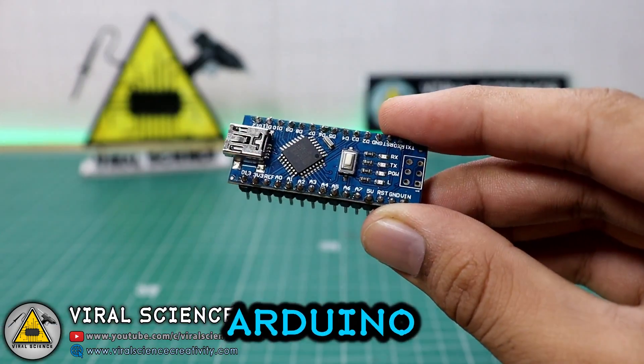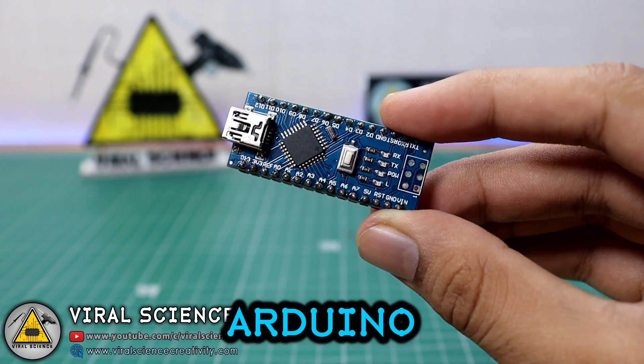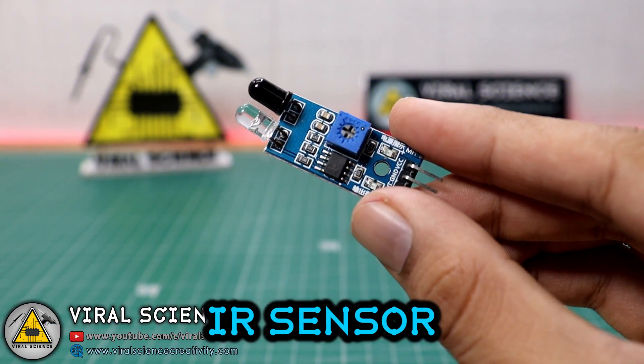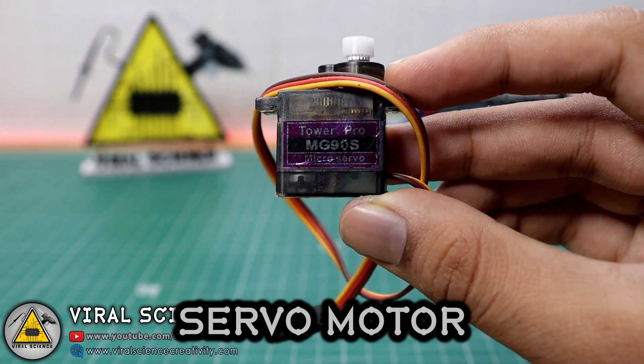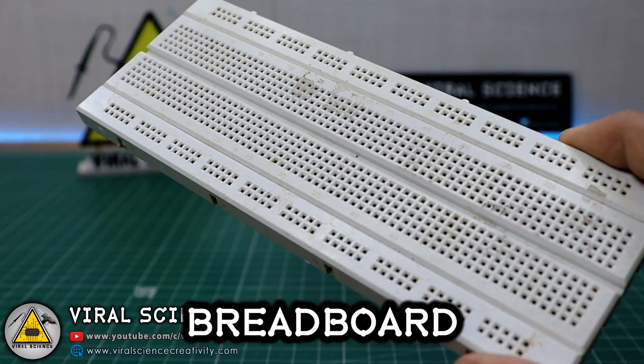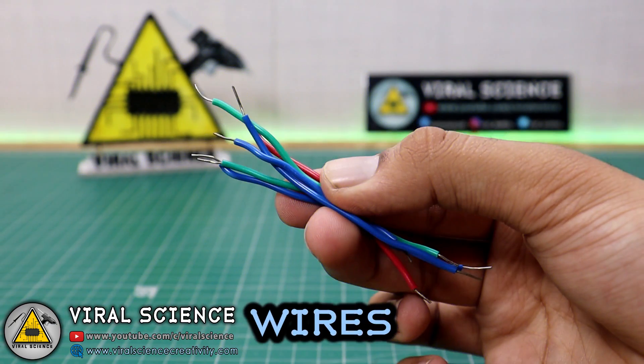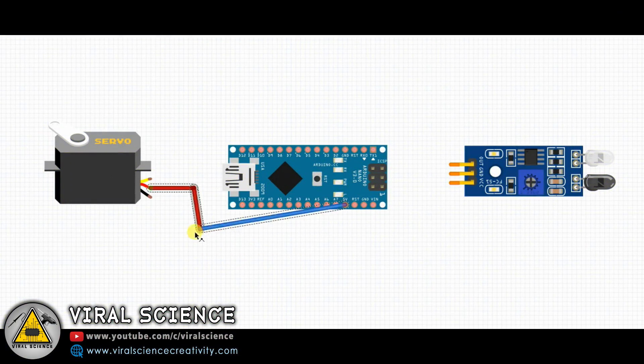So friends, for this project you will need an Arduino board, IR proximity sensor, servo motor, wires, a breadboard, and some wires. Now follow the circuit diagram and make your connections.